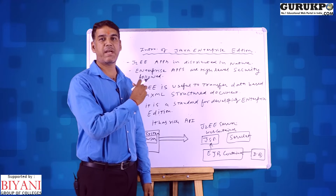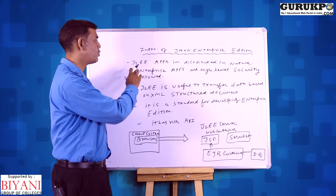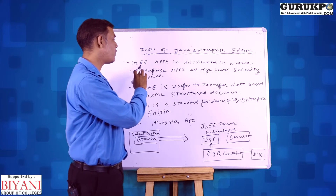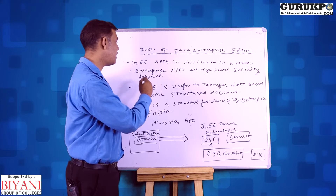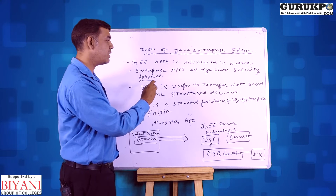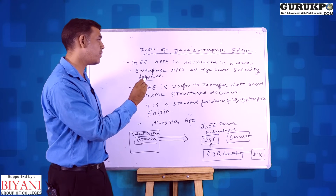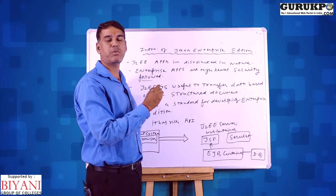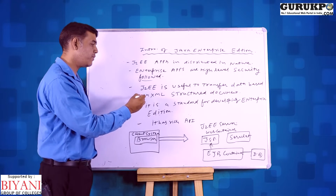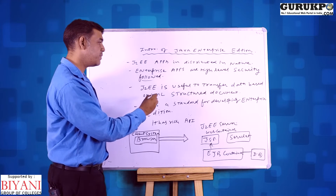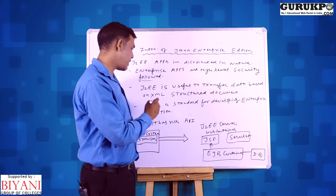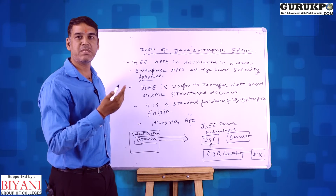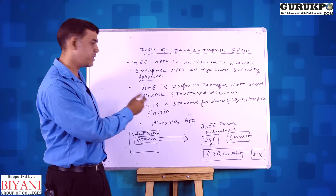We discuss the different editions of Java and J2EE enterprise. We further discuss the Java apps which we are using in a distributed nature. First of all, enterprise apps have high-level security followed. In J2EE, we have the XML part — XML is Extensible Markup Language, which is useful for user-defined tags. We follow XML-structured documents inside the J2EE part. It is basically a standard for developing enterprise editions, and enterprise distributed applications can be involved inside the J2EE part.